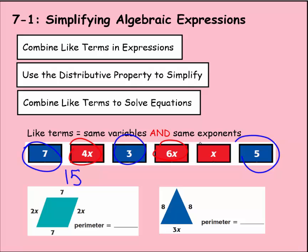And since these all have the same variable of x, you can also combine this and keep that variable. So I have 4, 6, and 1. So 4 plus 6 plus 1 is 11x. And we just keep that variable there.